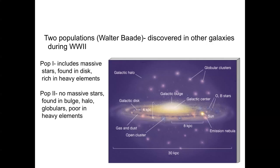Population 2 doesn't include any massive stars, and they're largely found in the bulge, the central bulge, in the halo of the galaxies, and in globular clusters. These stars are poor in heavy elements.